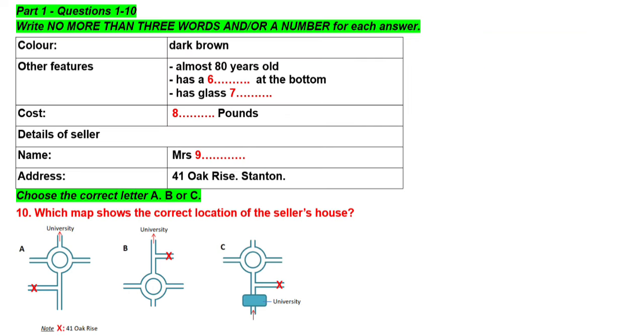Before you hear the rest of the conversation, you have some time to look at questions 6 to 10 on page 9. Now listen and answer questions 6 to 10. But the second one's a lovely bookcase, too. That's not painted. It's just the natural wood color, dark brown. It was my grandmother's, and I think she bought it sometime in the 1930s, so I'd say it must be getting on for 80 years old. So it's very good quality. They don't make them like that nowadays.